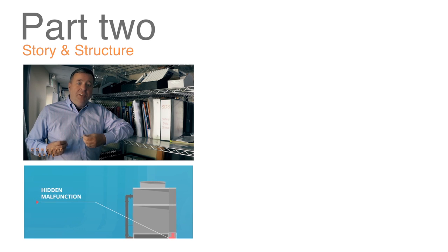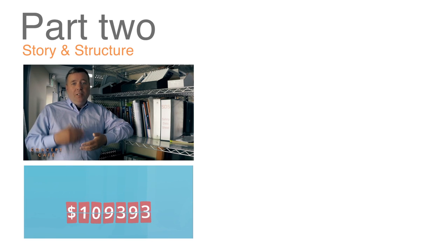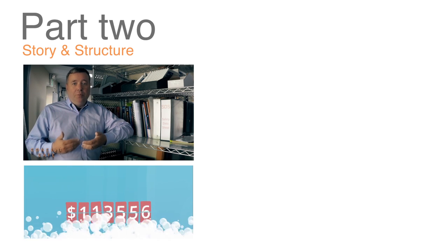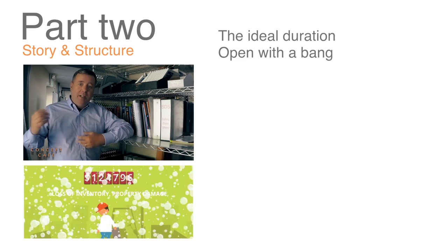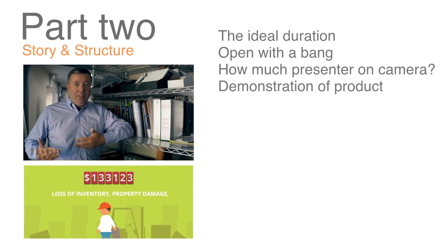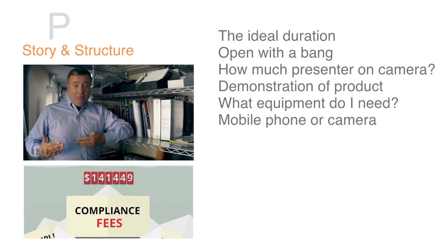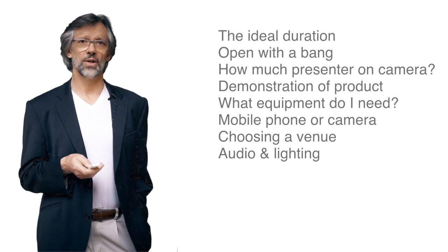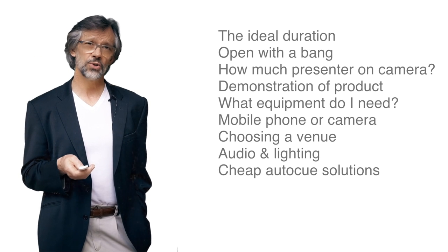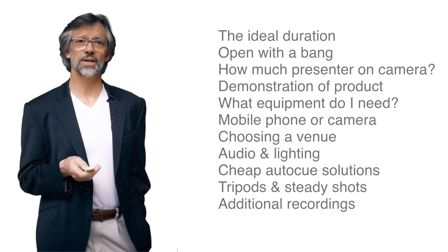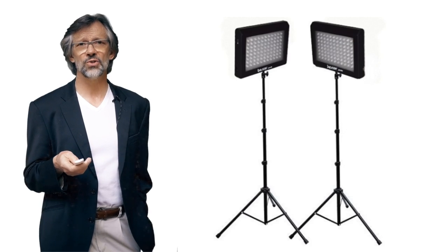Part 2 deals with the actual presentation and technical aspects of the video. For people to believe in your product, they have to believe in you — you have to be clear, authentic, and focused. The technical quality of the video also reflects on the credibility of the product, so you'll learn simple techniques such as lighting, equipment choices, location, script, auto-cue, and camera angles, all to assist you in creating a great-looking presentation.